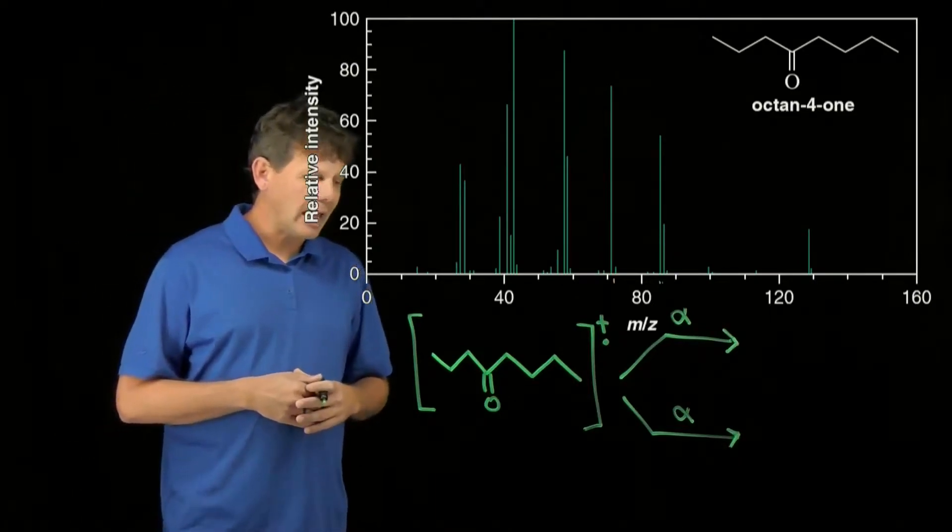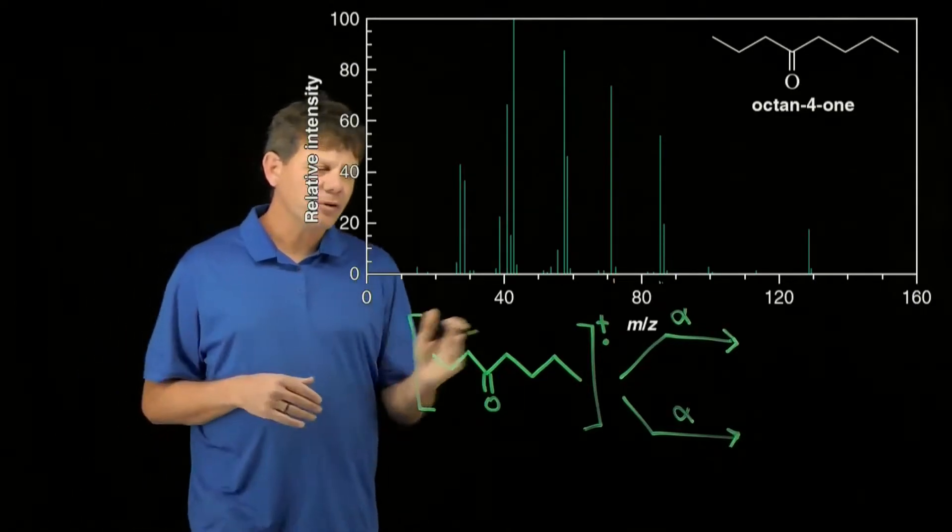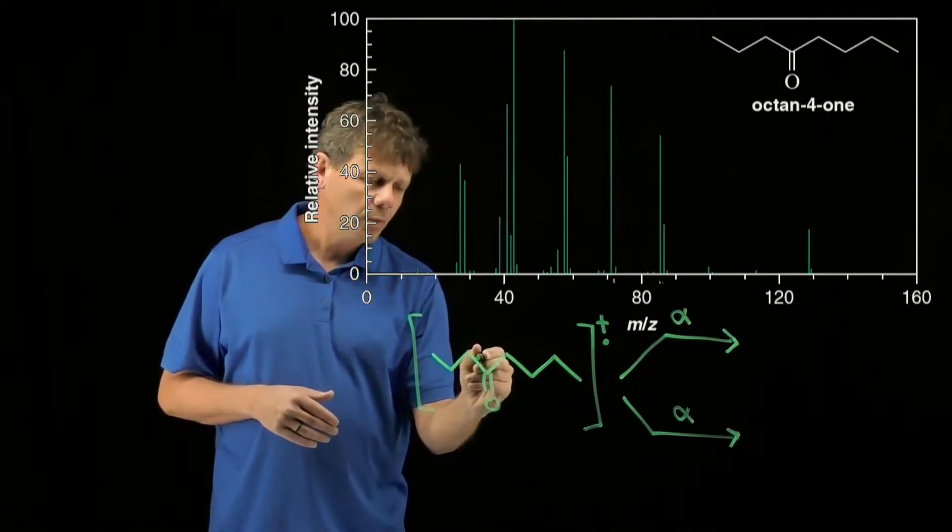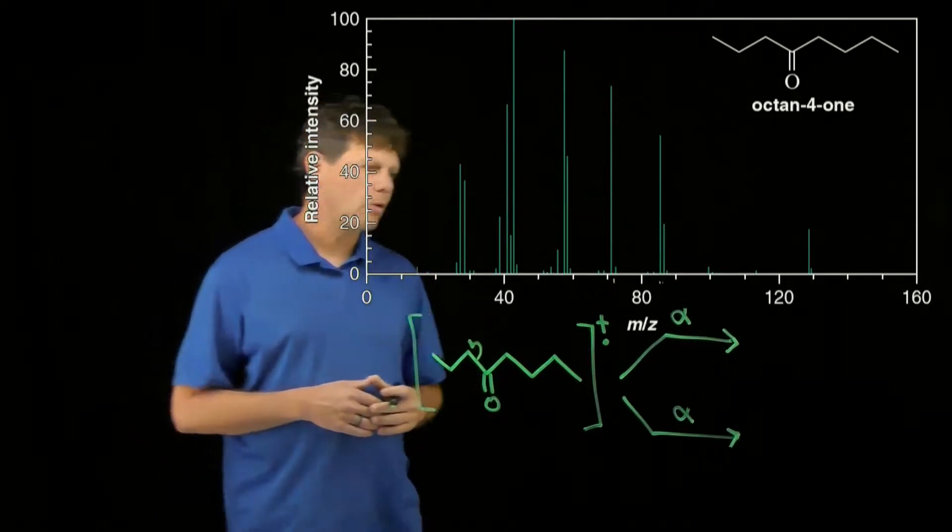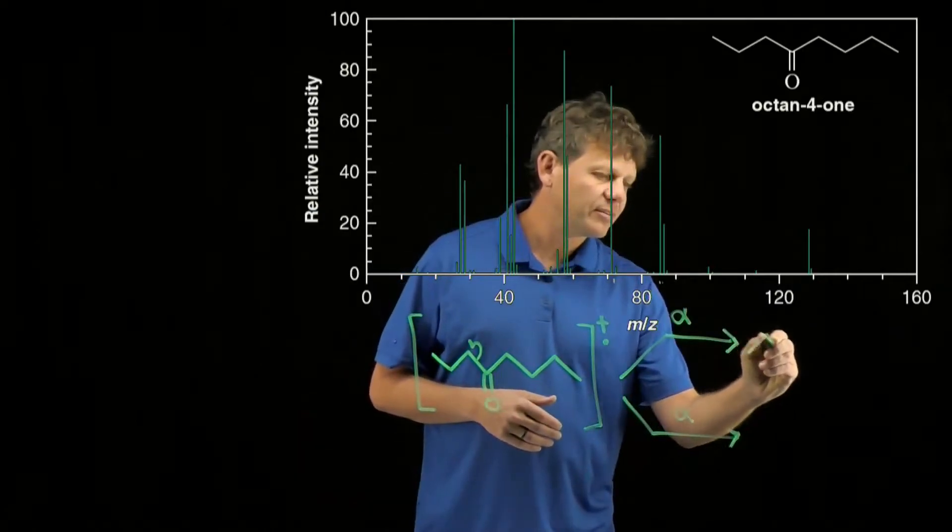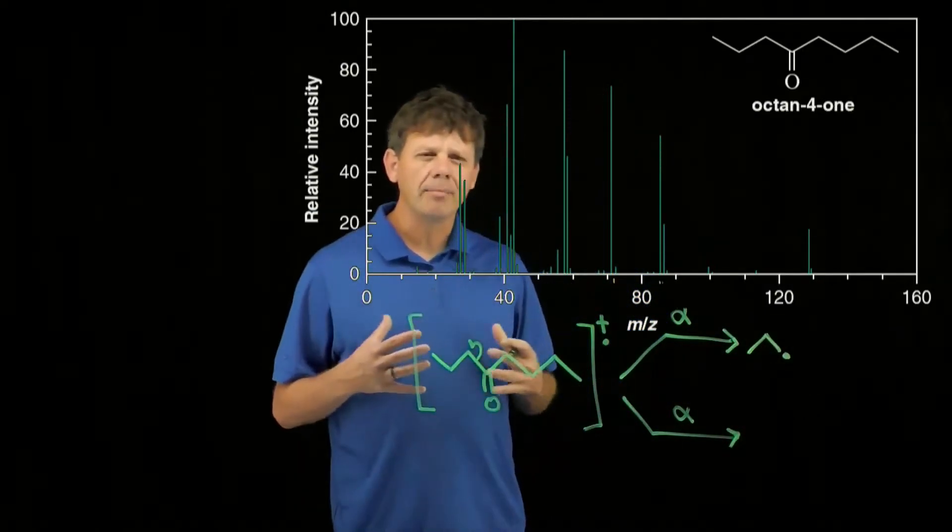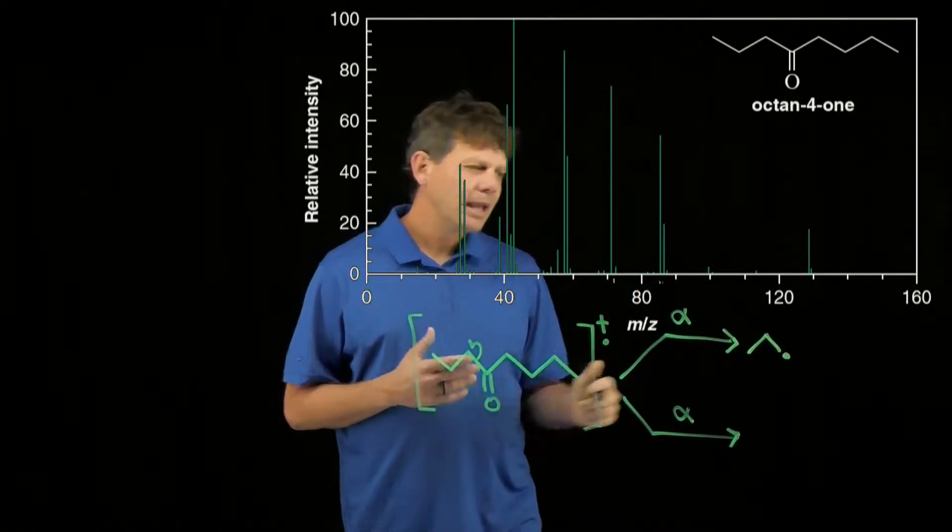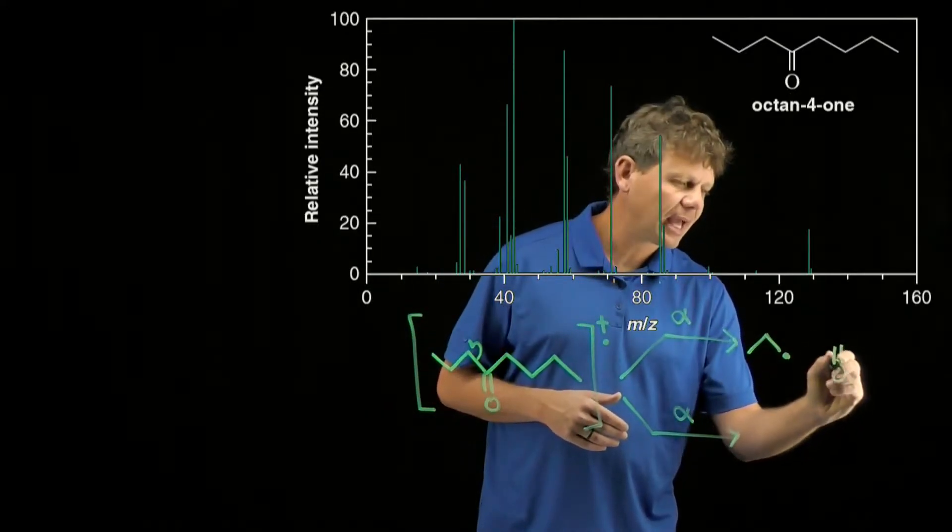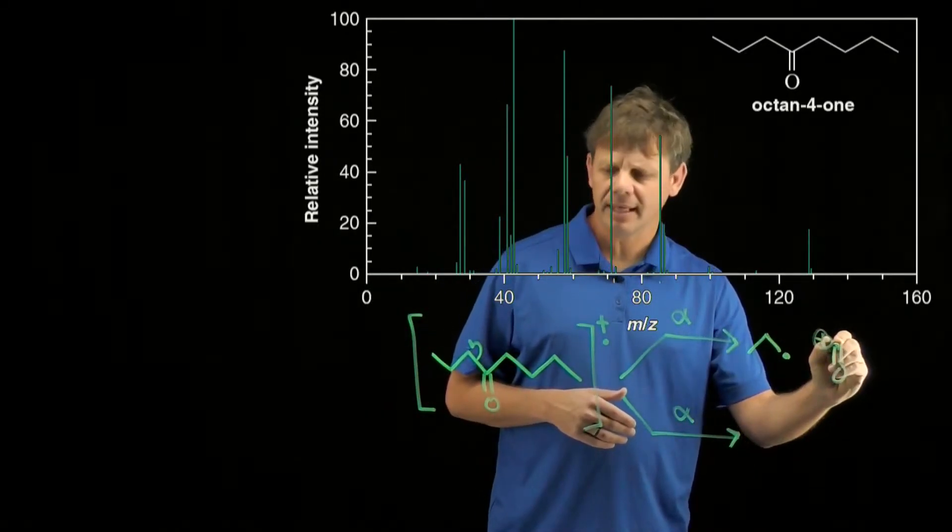Let's start by looking at the alpha cleavage. The first one we can do, and we're going to color code this, we'll have the alpha cleavage of the three carbon fragment over here. That's going to give us this radical that we know will not be detected because it's neutral, and this cation that will be detected.